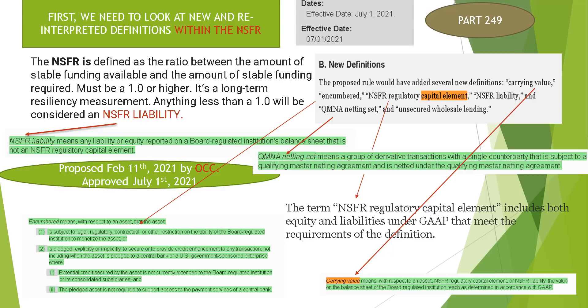We also have the NSFR regulatory capital element, which is equity and liabilities under GAAP that meet the requirements of the definition. NSFR liability is anything that does not meet that 1.0 or higher threshold. QM in a netting set means a group of derivative transactions with a single counterparty that is subject to a qualifying master netting agreement and is netted under that qualifying master netting agreement. And lastly, unsecured wholesale lending, which we will see on the next page.